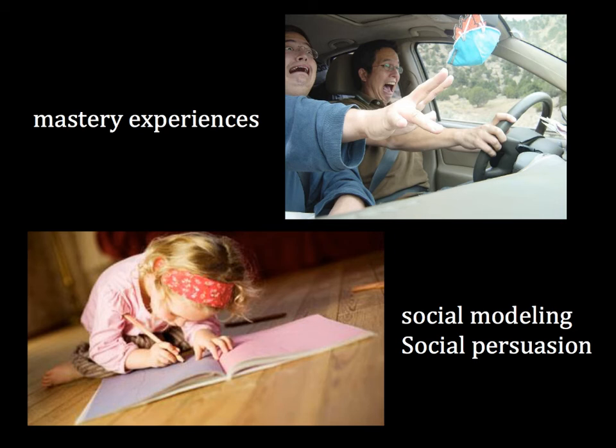Bandura believes the most effective way of developing a strong sense of efficacy is through mastery experiences — successes build a robust belief in one's efficacy, while failures undermine it. A second way is through social modeling: if we see others like ourselves succeed by sustained effort, we might come to believe we too have the capacity to do so. Social persuasion is a third way — if people are persuaded that they have what it takes to succeed, they exert more effort. Childhood is incredibly important as the time when we first begin having mastery experiences.